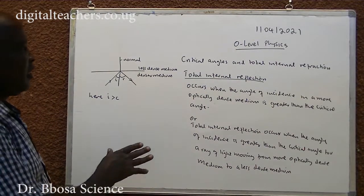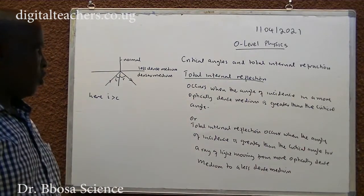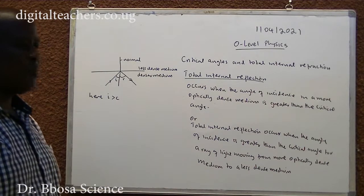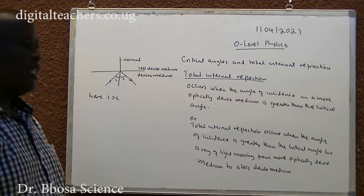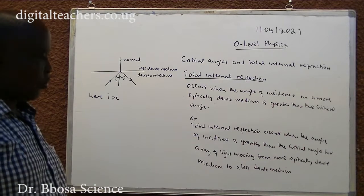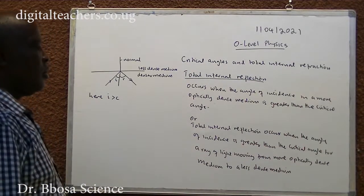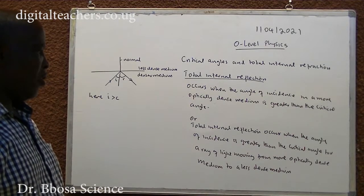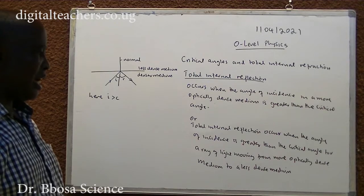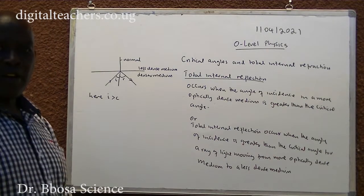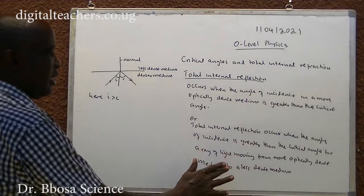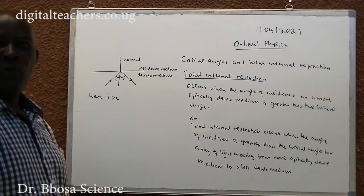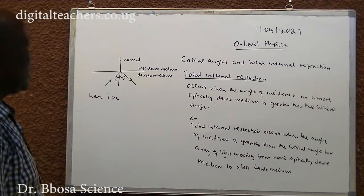Total internal reflection occurs when the angle of incidence in a more optically dense medium is greater than the critical angle, for a ray of light moving from a more optically dense medium to a less optically dense medium.